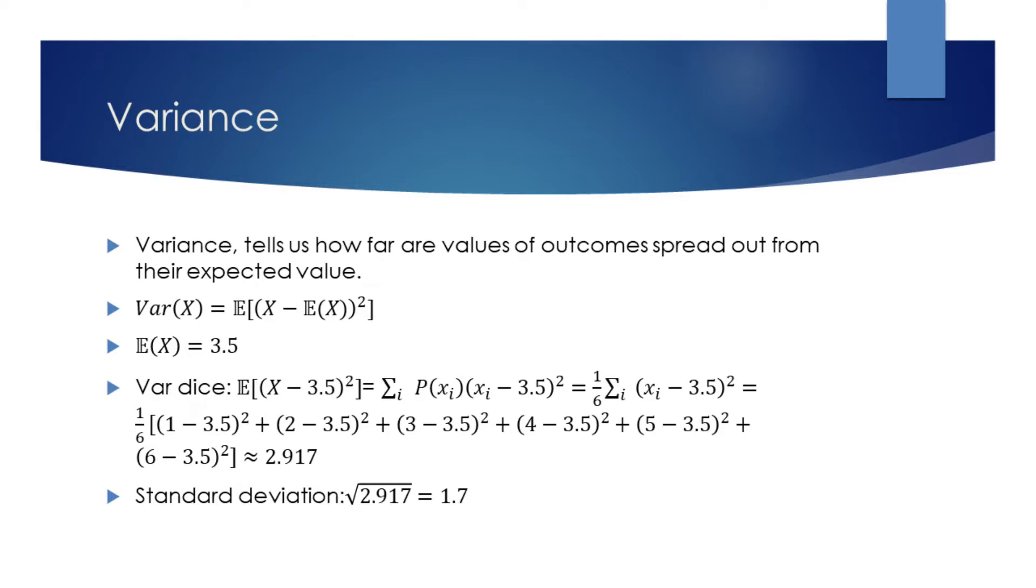We can move it outside of the summation. We can write out the summation to find that the variance is equal to approximately 2.9. We can also find the standard deviation by taking the square root of the variance. This measures the amount of variance.